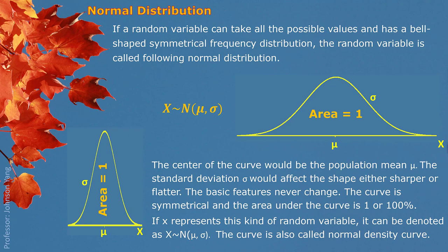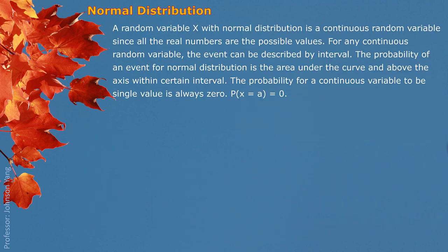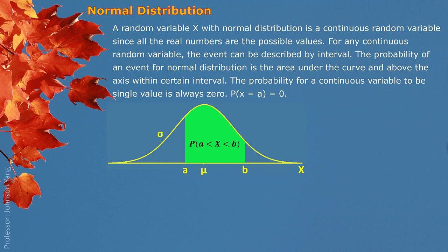For any normal distribution, if we know the standard deviation and average value, we know everything about this normal distribution. A random variable X with normal distribution is a continuous random variable, since all real numbers are the possible values. For any continuous random variable, the event can be described by an interval. The probability of an event for normal distribution is the area under the curve and above the axis within a certain interval. Here we have an example: the shaded green area between A and B describes the probability that the random variable X is greater than A and smaller than B.